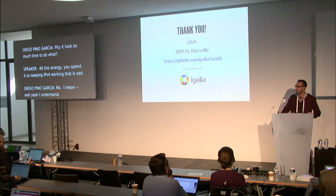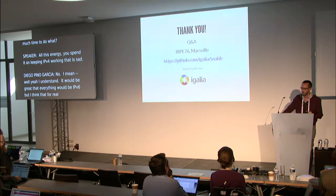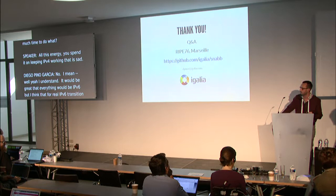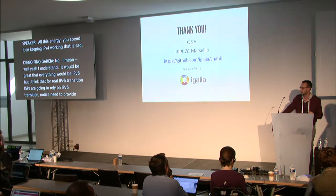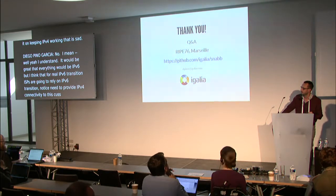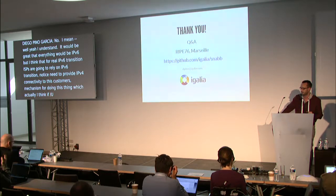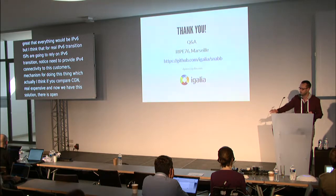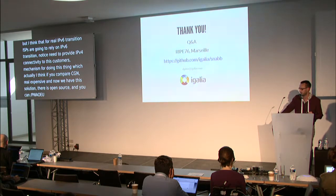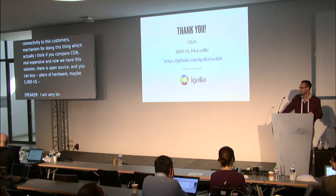It would be great if everything were IPv6. But I think that for a real IPv6 transition, ISPs are going to rely on IPv6 transition technologies that need to provide IPv4 connectivity to their customers — and this is what the project does. If you compare it to CGN — those middleboxes are really expensive. Now we have an open source solution where you can buy a commodity off-the-shelf piece of hardware for maybe $5,000. It's just sad that it's still needed.